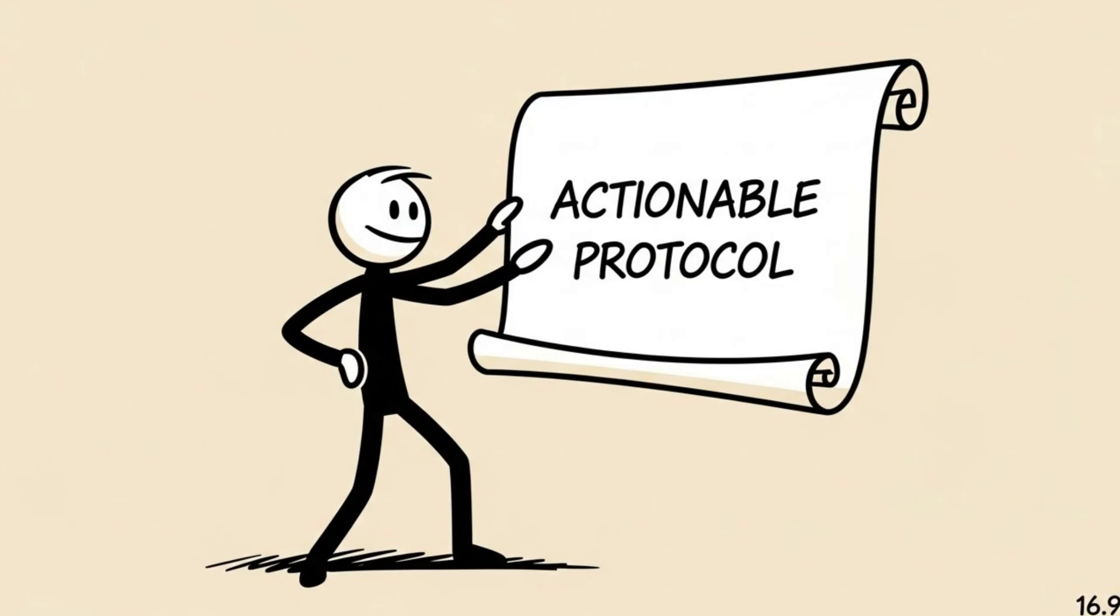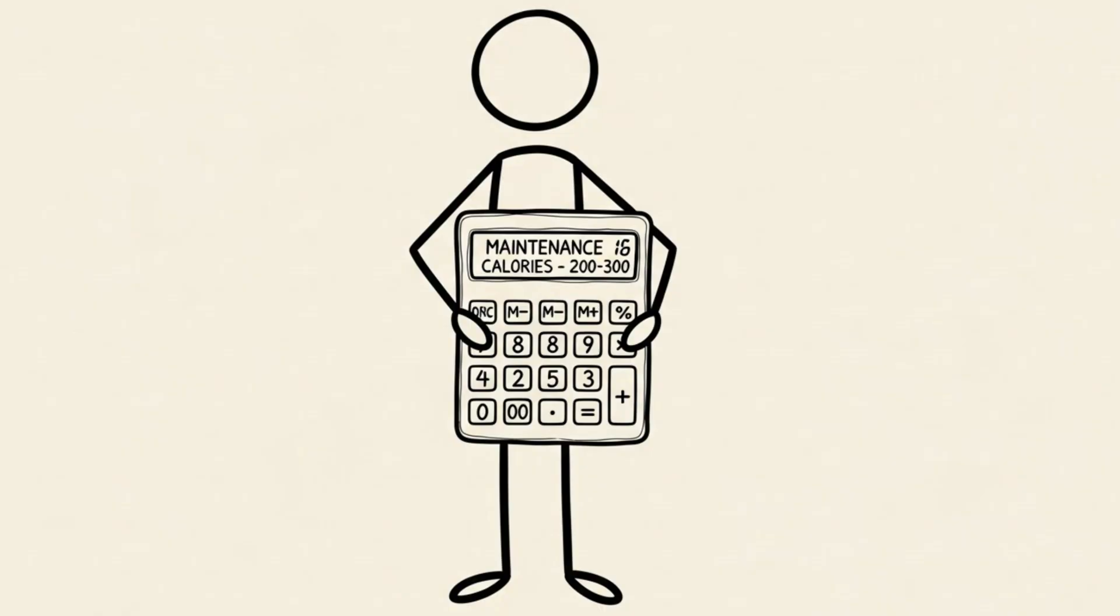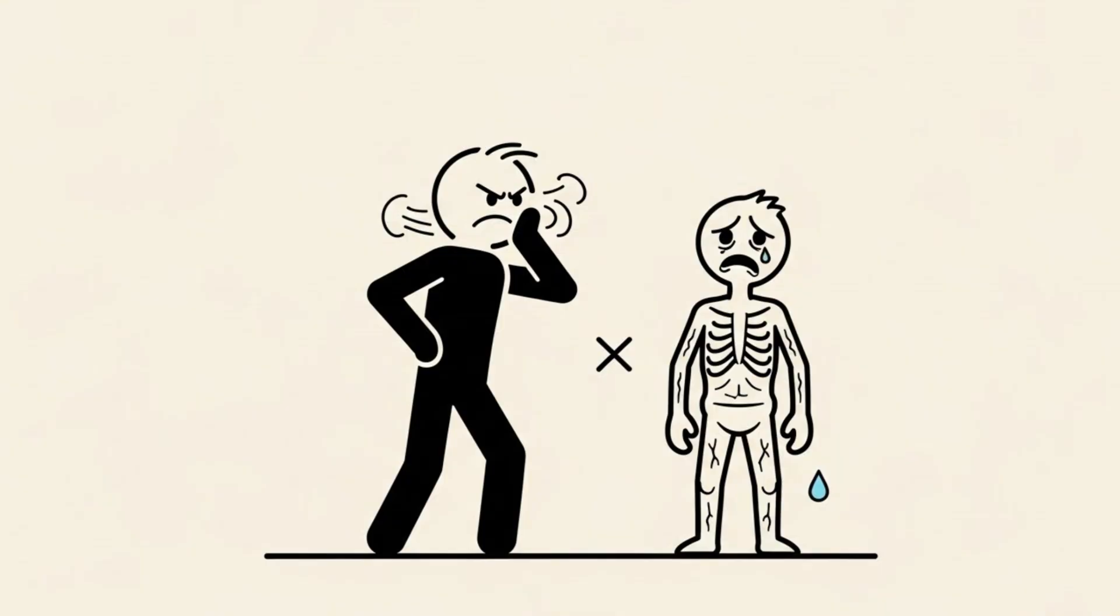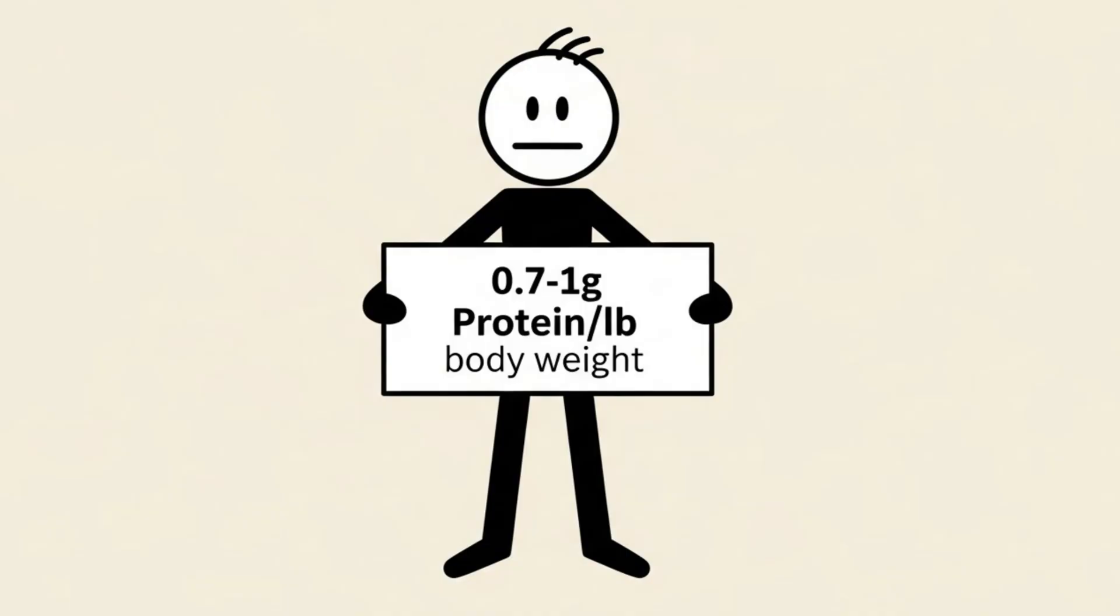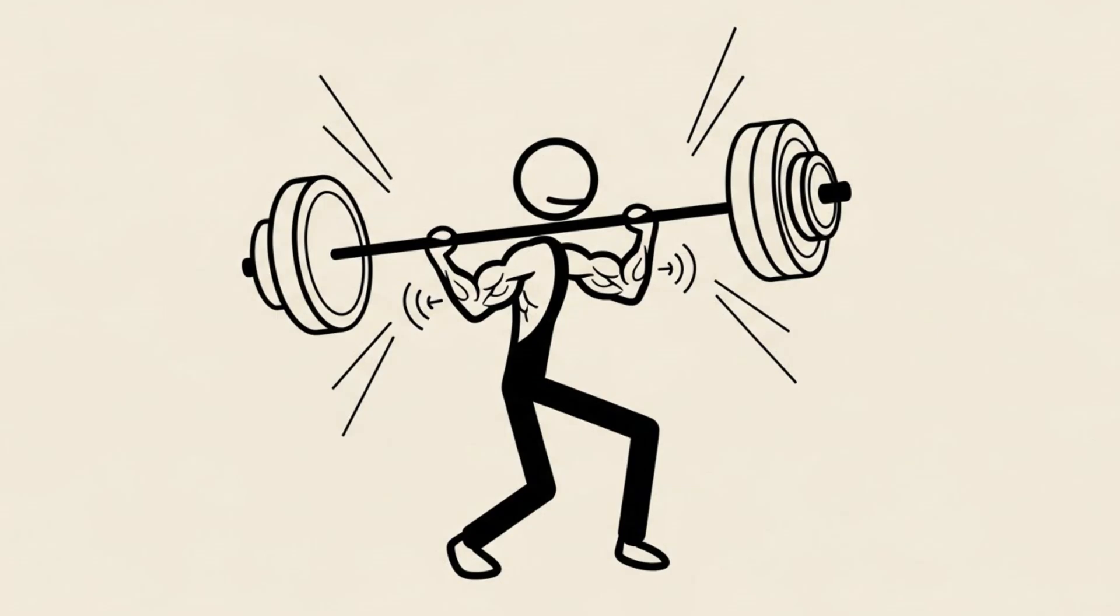So here is your actionable protocol to actually tone up. 1. Calculate your maintenance calories and subtract 200-300. Do not starve yourself. 2. Prioritize protein. Aim for 0.7 to 1 gram per pound of body weight. 3. Lift heavy weights 3 to 4 times a week to send the signal to build muscle. 4. Stop relying on cardio to burn calories.